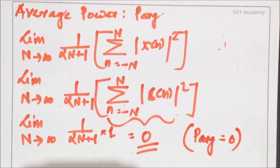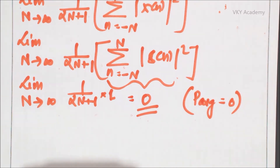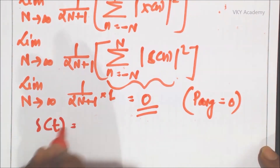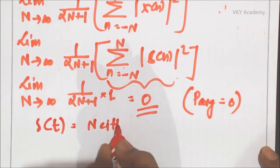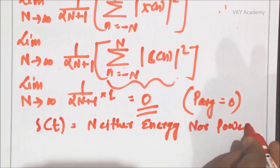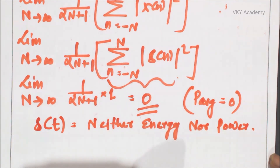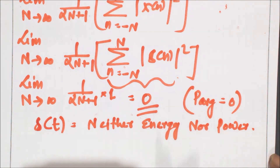We can conclude that the given discrete-time signal δ(n), the unit impulse function, is always an energy signal — it is not a power signal. One important point: the unit impulse signal in the continuous domain, δ(t), is neither an energy signal nor a power signal. This is a very important short answer question. In contrast, the unit impulse function in the discrete domain is always an energy signal. This concludes the energy and average power calculation of the unit impulse function in discrete domain. Thank you.